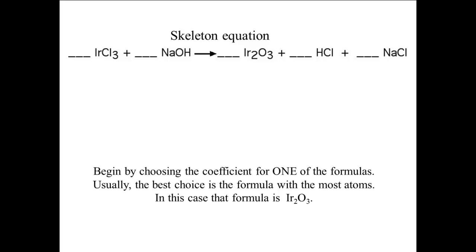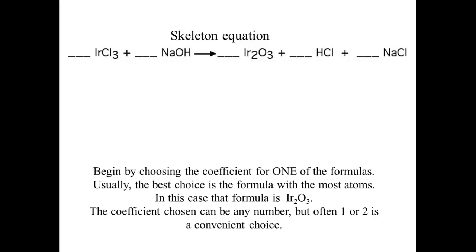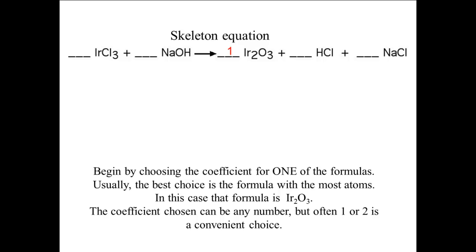So now the question becomes: what number should I choose for the coefficient? The coefficient chosen can be any number, but often 1 or 2 is a convenient choice. If the number gets too large, that may make it more difficult to figure out the other coefficients. So let's pick a 1 for the coefficient of IR2O3. Knowing this coefficient allows us to determine the number of atoms of iridium and of oxygen on the right side of the equation, because each element only appears once in the products.